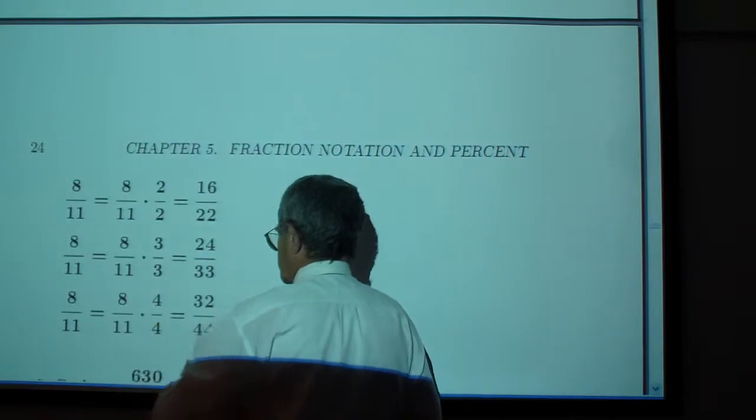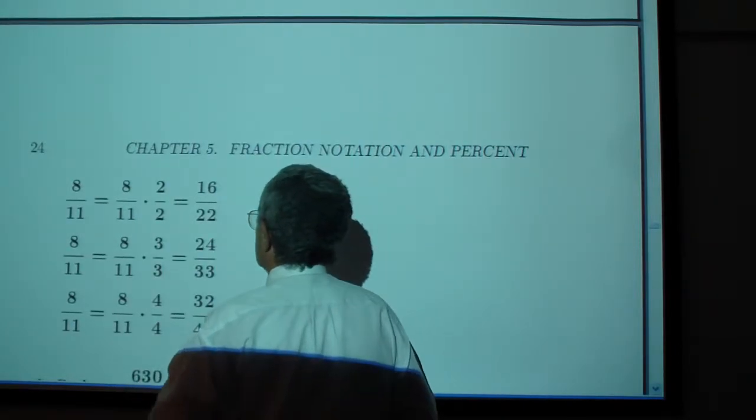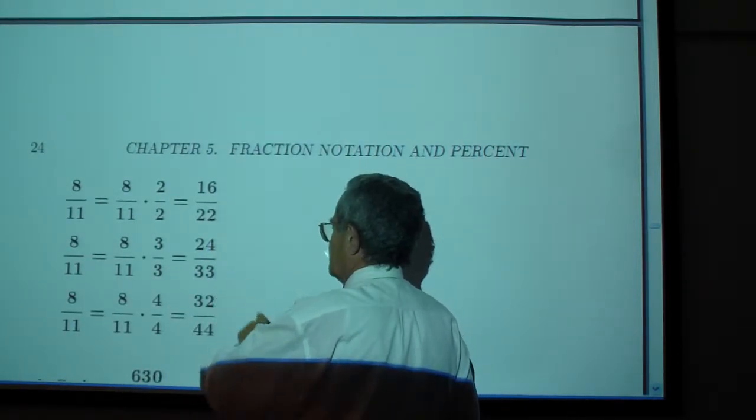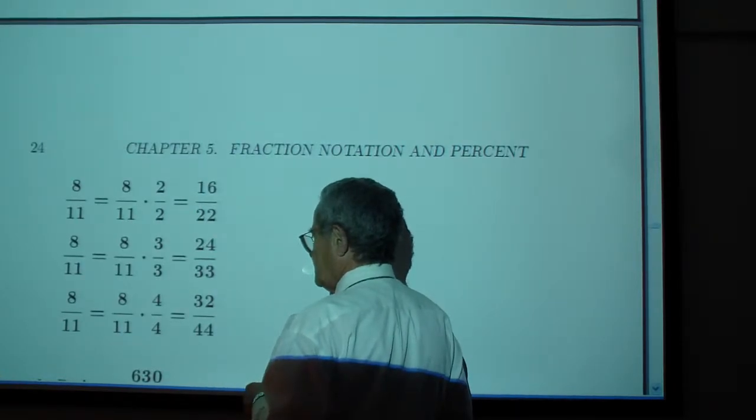Multiply by 2 over 2, 3 over 3, 4 over 4. This gives us 16 over 22, 24 over 33, and 32 over 44.